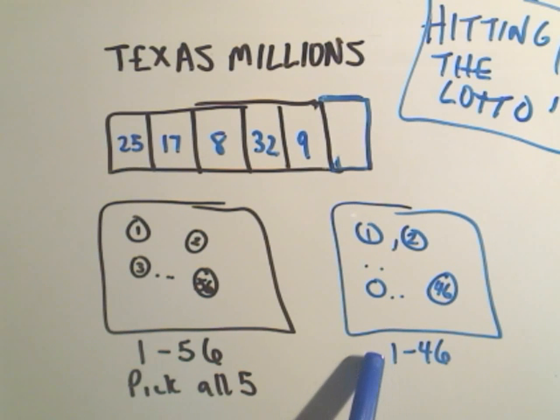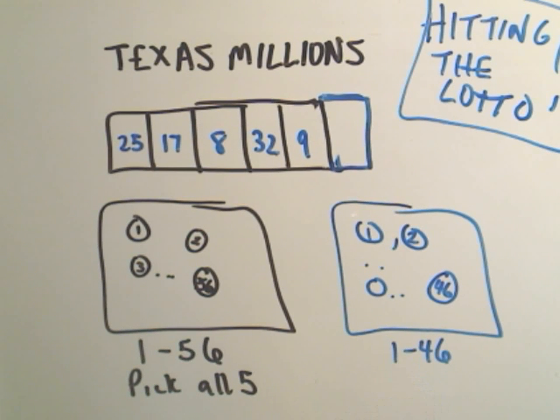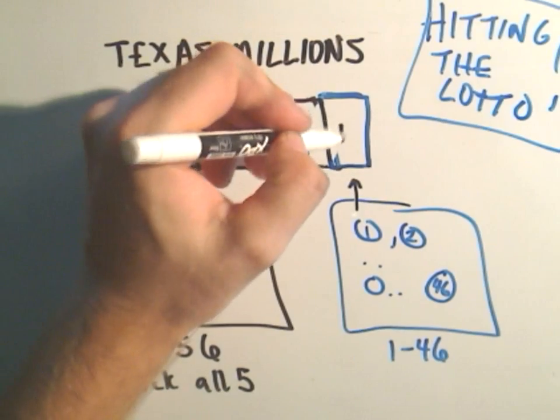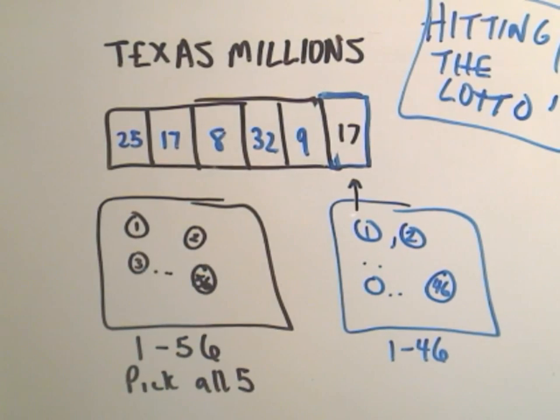And then you also have to pick, there's a different colored ball that you have to pick exactly correct as well. And it's labeled 1 through 46. So that one, it could even be possible that one of the numbers would repeat itself with one of these new ones.